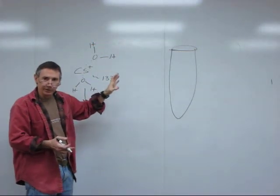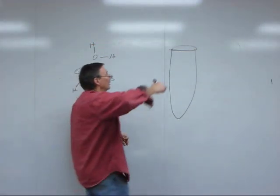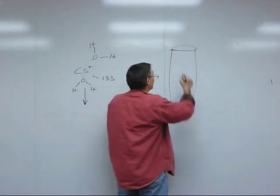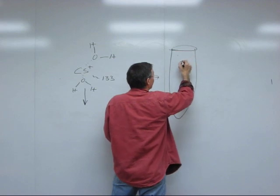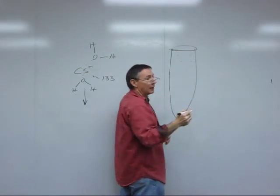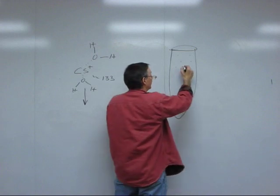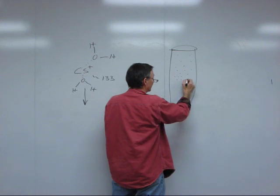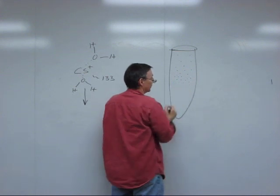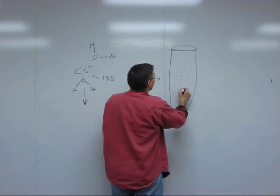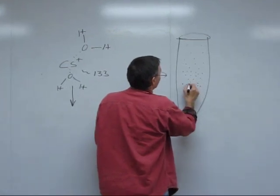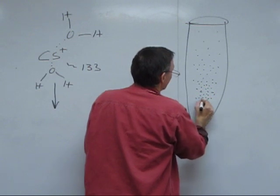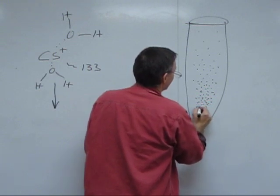The net result is that after two days of centrifugation at 100,000 times gravity, you're still going to have some cesium ions right up here at the top. But you're going to have a few more of them a little deeper. As you get yet further, the concentration of cesium is a little higher. As you get further down than that, it's yet higher. In fact, the deeper down you go in the tube, the greater the concentration of cesium.